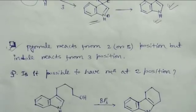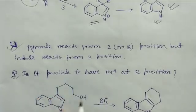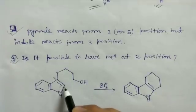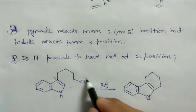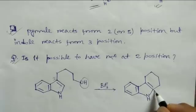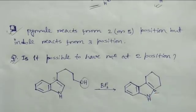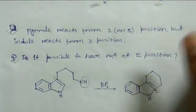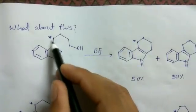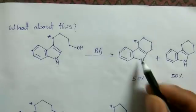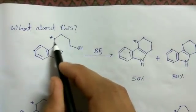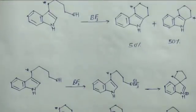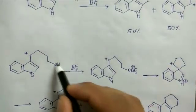Now, is it possible to get 2-substitution in indole? For that, we use a substrate where the 3-position is already blocked and only the 2-position is free. Treating it with BF₃ makes the group at C3 a leaving group, enabling electrophilic aromatic substitution at C2. However, when this reaction is labeled with ¹³C, scrambling occurs — 50% of one product and 50% of another are obtained. This is explained by the reaction mechanism.